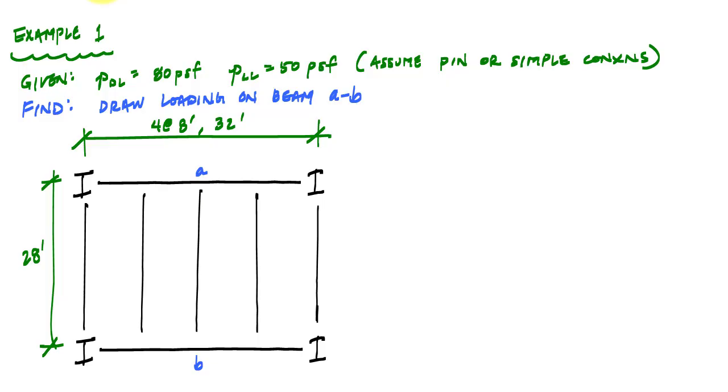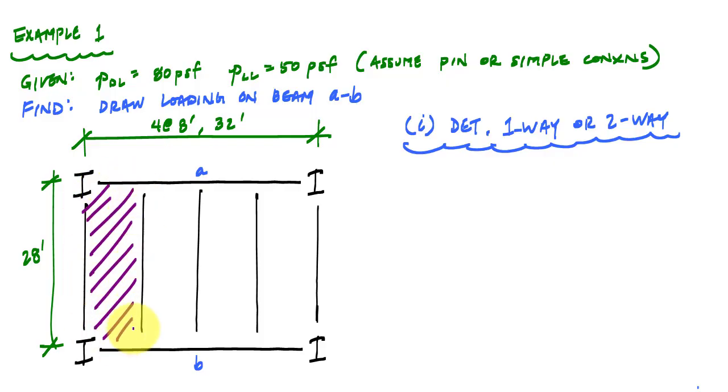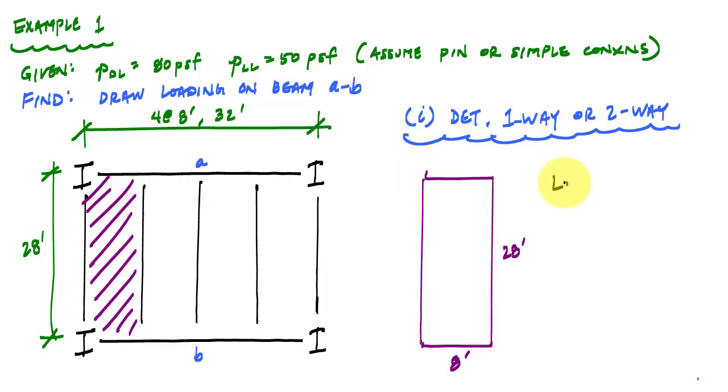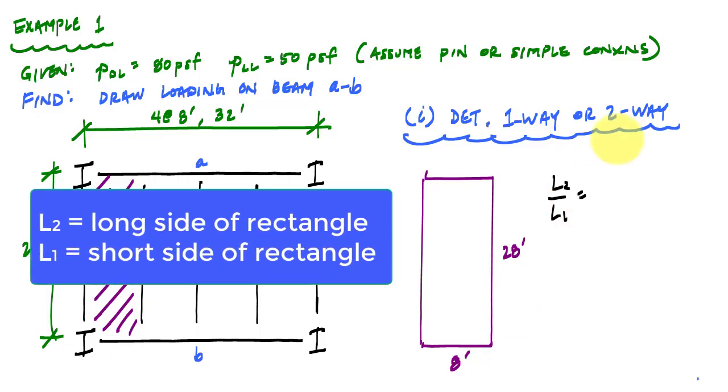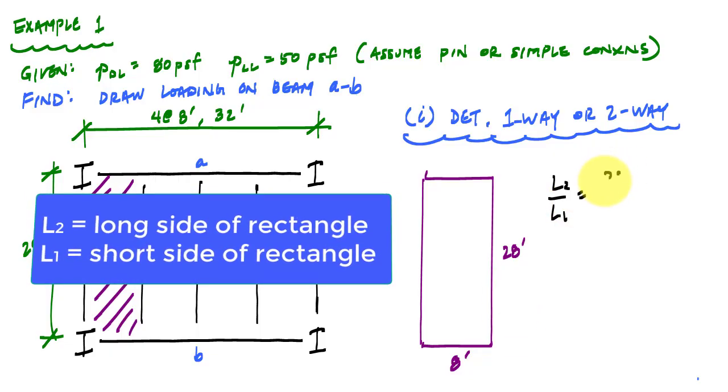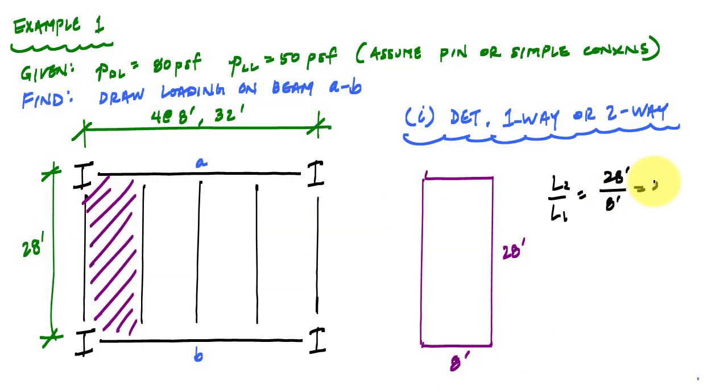All right, so the first thing I want to do is determine if this is a one-way or two-way system. My typical area surrounded by beams is this purple shaded region here, and that's representative of all the areas there in that floor plan. The ratio L2 over L1 is L2 is the long side of this rectangle, so that's going to be 28 feet, and then the short side is 8 feet, and so this is 3.5, which is greater than 2, therefore this is a one-way system.